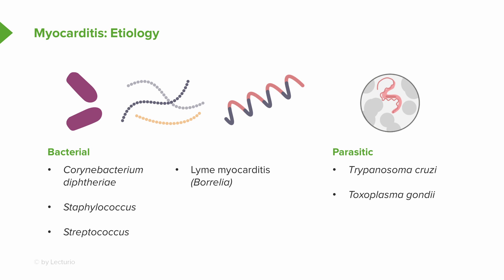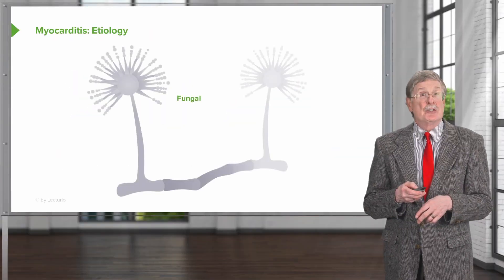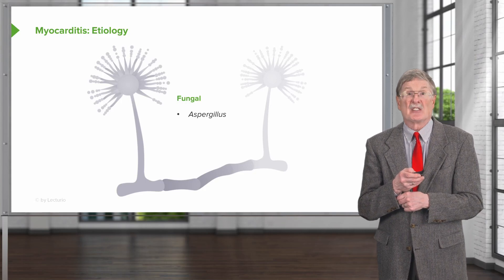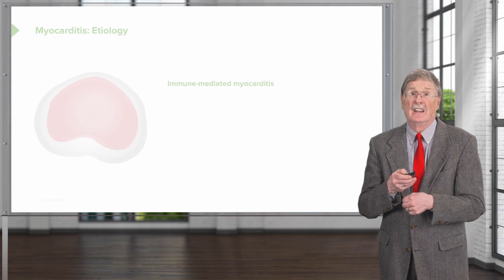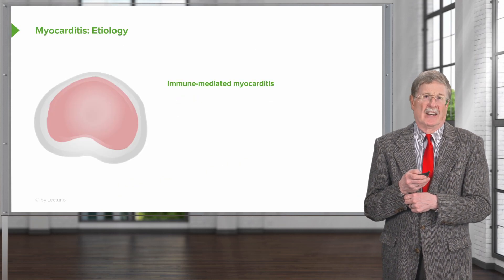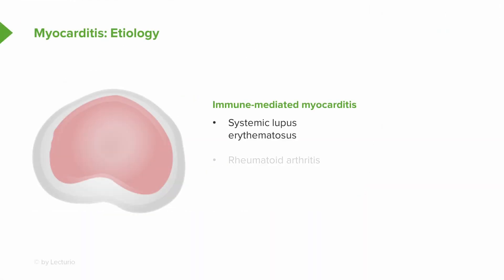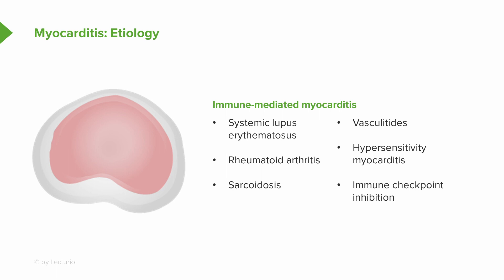There are other forms as well. You can have a fungal myocarditis — Aspergillus and Candida are common players. You can also have immune-mediated myocarditis, associated with lupus, rheumatoid arthritis, sarcoidosis, other vasculitides, and hypersensitivity myocarditis due to drug administration — not illicit drugs. Any of a variety of medications can elicit a hypereosinophilic or hypersensitivity myocarditis.